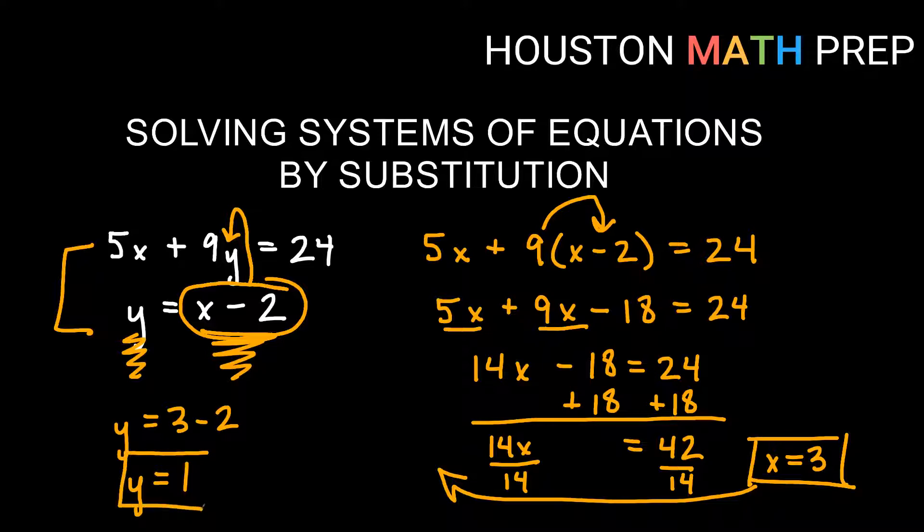Okay now whoever is going over math with you, your instructor or your tutor or whatever, they may be okay with you writing the x and y values separately. They may want you to write as an ordered pair. So you might say x equals 3 and y equals 1 and circle your answer like that or they may want you to say 3 comma 1 like it's an ordered pair and we would graph possibly this 3 comma 1.